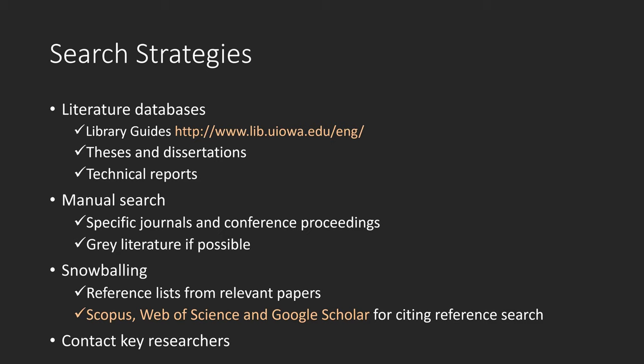Places to look at citing references can be Scopus, Web of Science, and Google Scholar. Sometimes it's important to identify ongoing studies. You may have to contact relevant individuals or organizations for information about unpublished or ongoing studies.